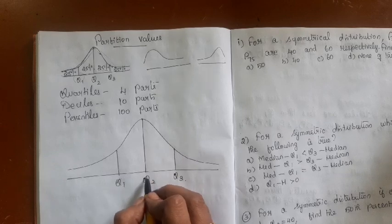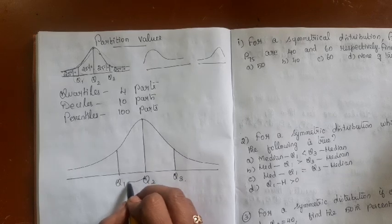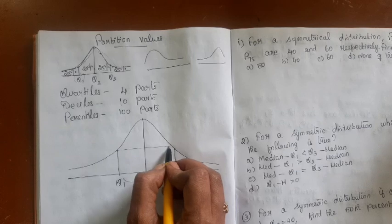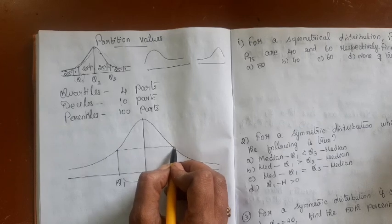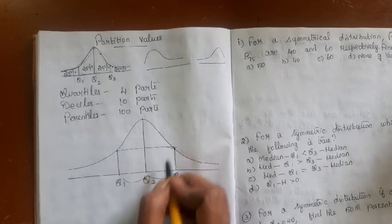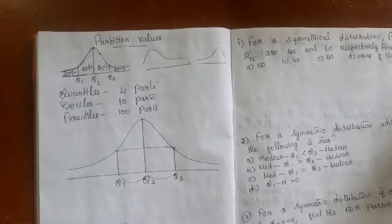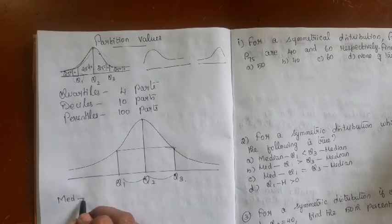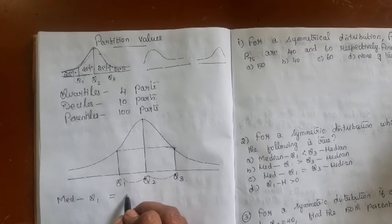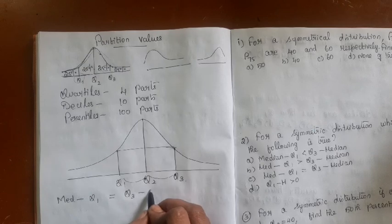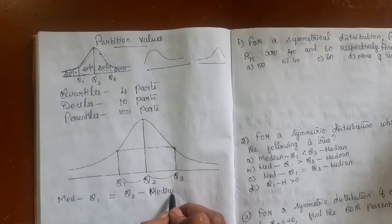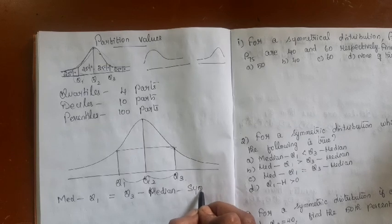If the values at equal distances from the center have the same frequencies, the curve is said to be symmetric. In other words, if median minus Q1 is equal to Q3 minus median (or Q2), the curve is said to be symmetric.